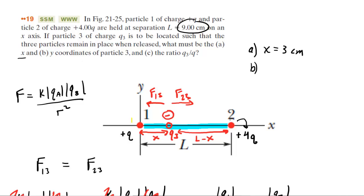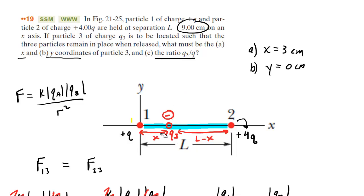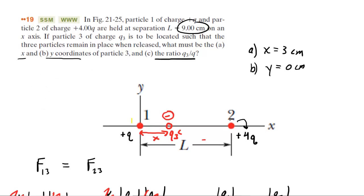For Part B, the y-coordinate: we can see that charge Q3 is sitting on the x-axis, so the y-coordinate is simply zero centimeters. Now we need to look at Part C — they want the ratio of Q3 to Q. To answer that, let's look at the charge Q at the origin and the forces acting on it.